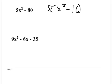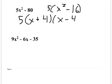Now x² - 16 is a difference of squares, which we did yesterday. Difference of squares means it factors as the square root of the first plus the square root of the second, times the square root of the first minus the square root of the second. So the answer is 5(x + 4)(x - 4). That's as factored as it can be.